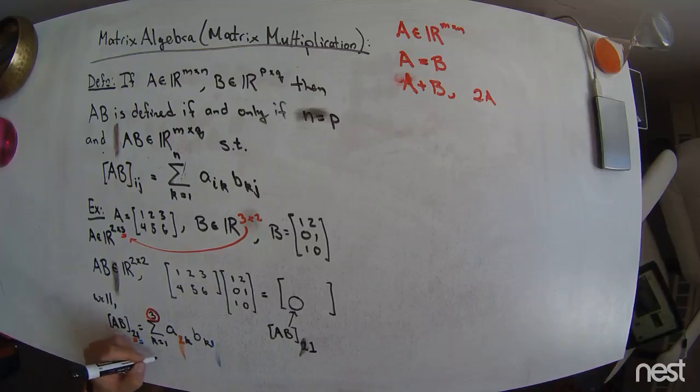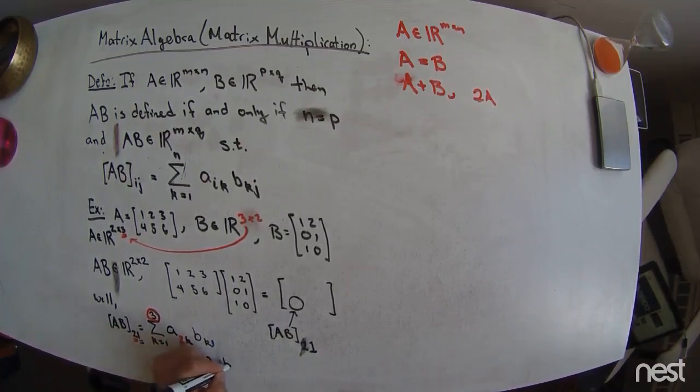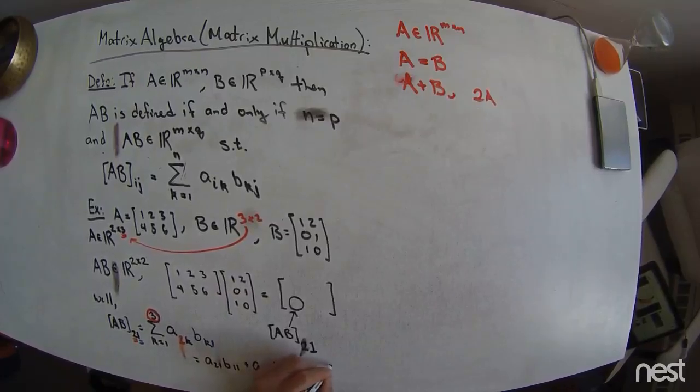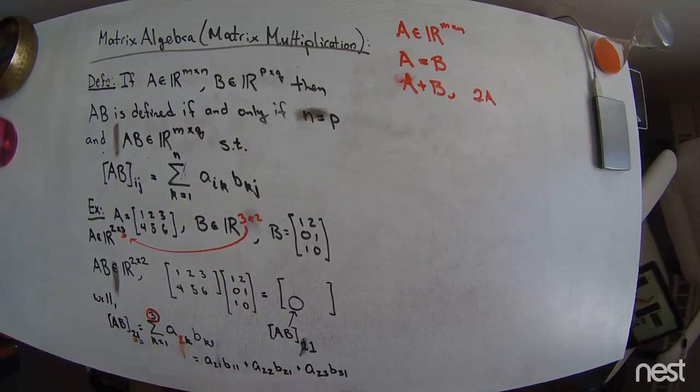If we write down this sum, this sum is going to look like a sub 2, 1, b sub 1, 1, plus a sub 2, 2, times b sub 2, 1, plus a sub 2, 3, times b sub 3, 1.